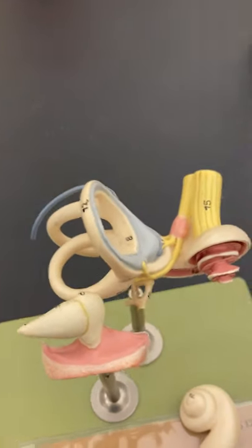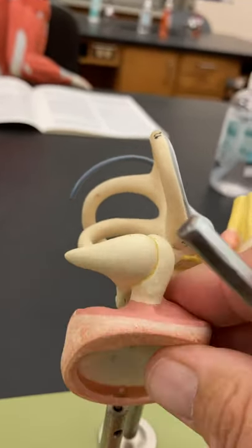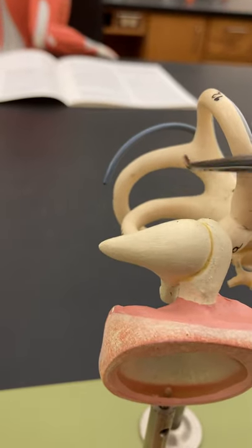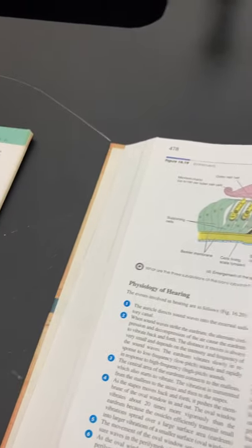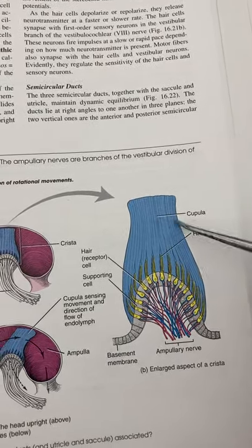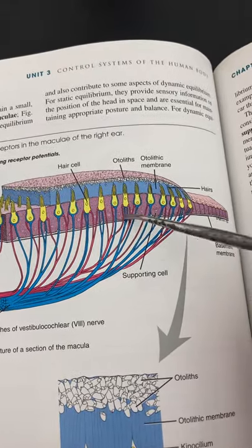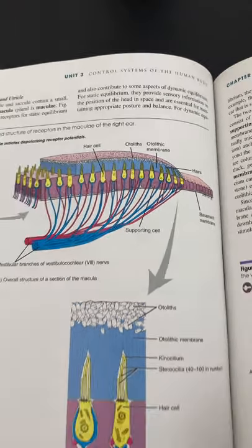The semicircular canals are in three dimensions — there's a lateral one, a vertical one, and one for depth. These are interesting: they operate very similarly with hair cells and a gel around them, whether it's semicircular canals or the vestibule. Some of them have tiny rocks called otoliths embedded in this gel. When you move, the rocks move within the gel, giving feedback to your body about where you are in space.